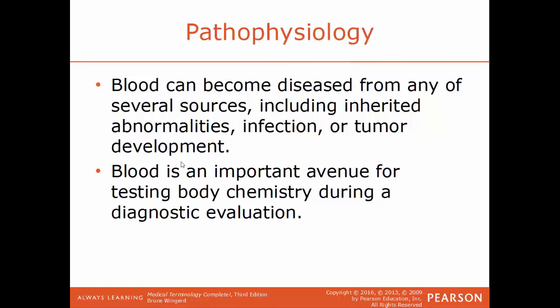Blood can become diseased from a variety of sources: an inherited mutation, an infection, or a tumor. Blood is also an important diagnostic tool — in any given blood sample, the numbers of white blood cells should stay at a certain ratio, and the percentage of red blood cells should remain constant in a healthy person. When there's an infection or injury, these numbers get thrown off, so knowing what to look for in a standard blood test helps you treat what is wrong.